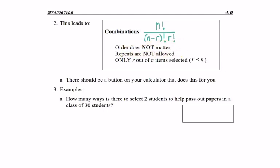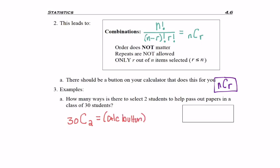Repeats are still not allowed and we only select r out of n items, where r has to be the same or less than n. It's also written as nCr, which is a button on your calculator — it should be right next to the nPr button. Back to our original question: how many ways is there to select two people to help pass out papers in a class of 30 students? 30 students choose 2. Use the calculator's built-in function and you get 435 different ways to select two students.